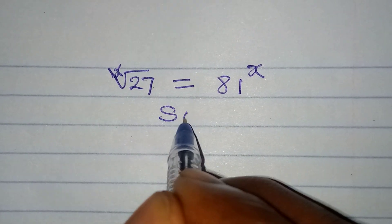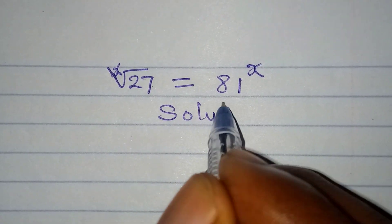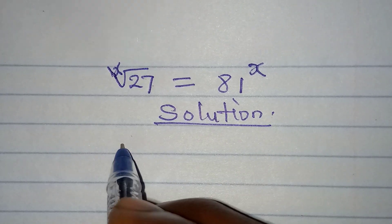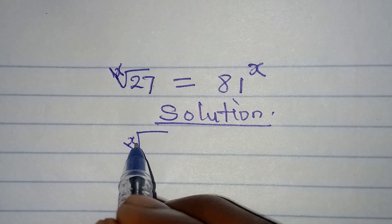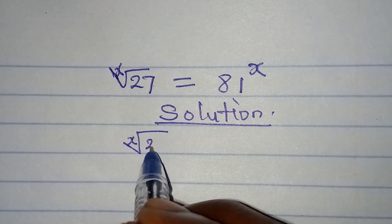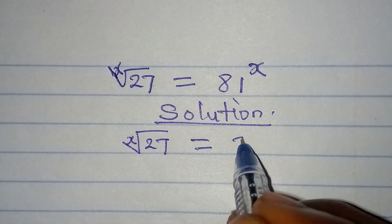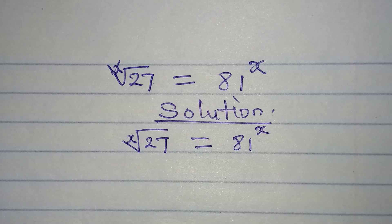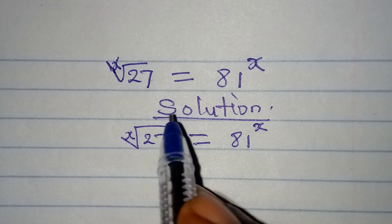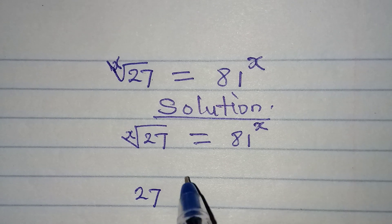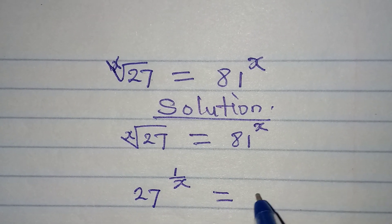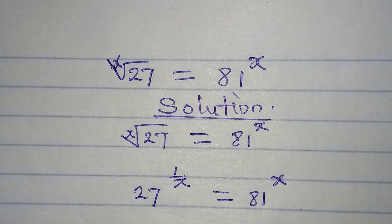Hello everyone. Let's find the solution to this problem: the x-th root of 27 equals 81 to the power of x. This is manageable because the x-th root of 27 is the same as 27 to the power of 1 over x, and on the right we have 81 to the power of x.